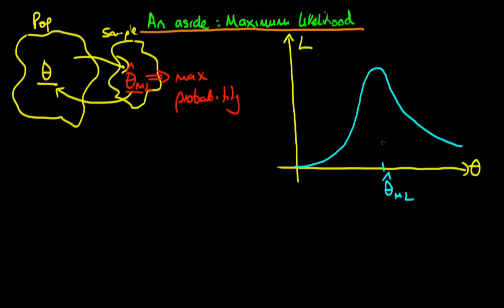Note that the likelihood is an inverse probability. It's inverse because we define likelihood as a function of theta, and because the integral over all values of theta doesn't necessarily have to integrate to one, it's not a valid probability density. That's why you hear it referred to as an inverse probability rather than a probability density itself.